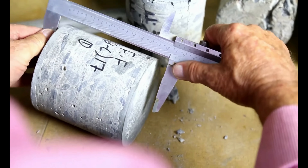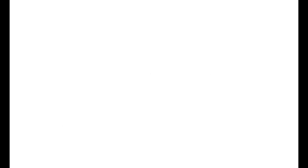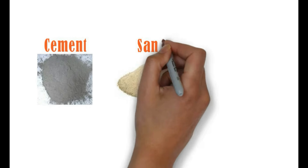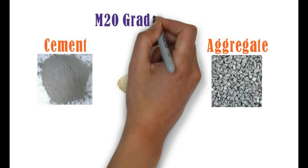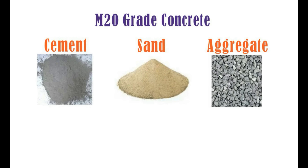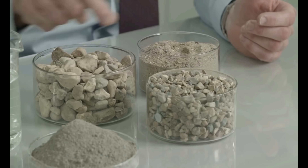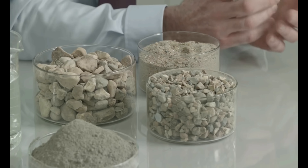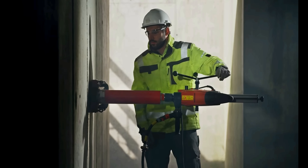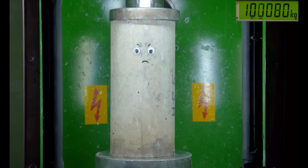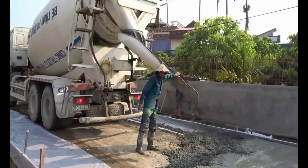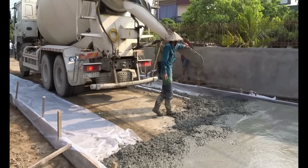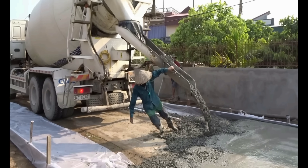Now that the cement is ready, it's time to source the aggregate. Aggregate is the most important component of concrete, comprising up to 75% of concrete by volume. Aggregate is composed of both gravel and sand. The sand is added so the spaces in between the gravel are completely filled, thereby giving the concrete stronger bonding and consistency. A well-graded aggregate, which is a balanced mixture of coarse and fine particles, reduces the requirement of cement, making the whole process more cost-effective.